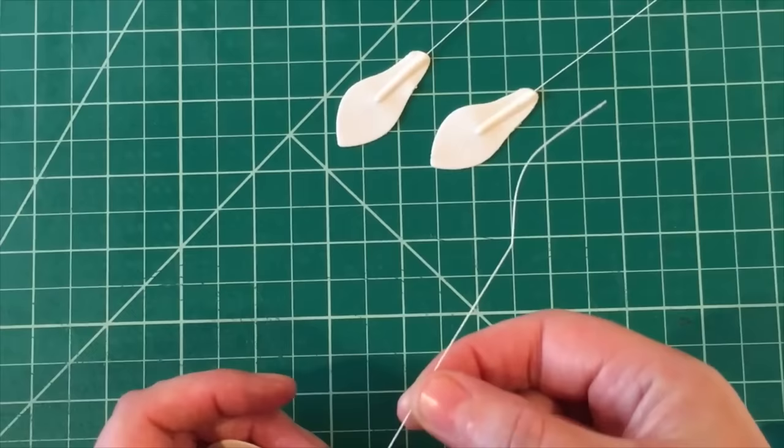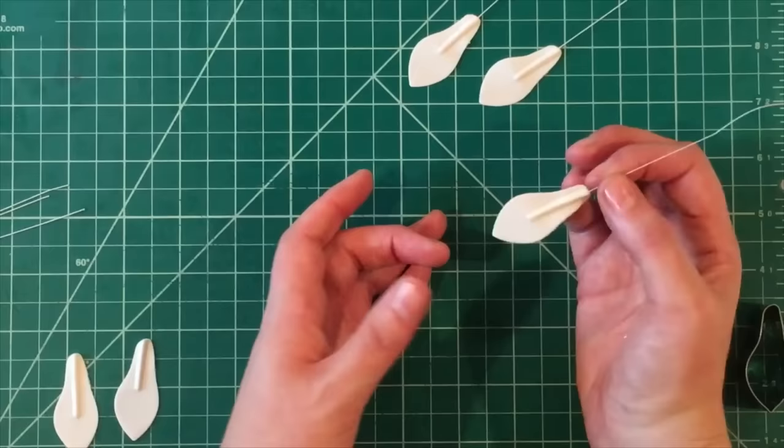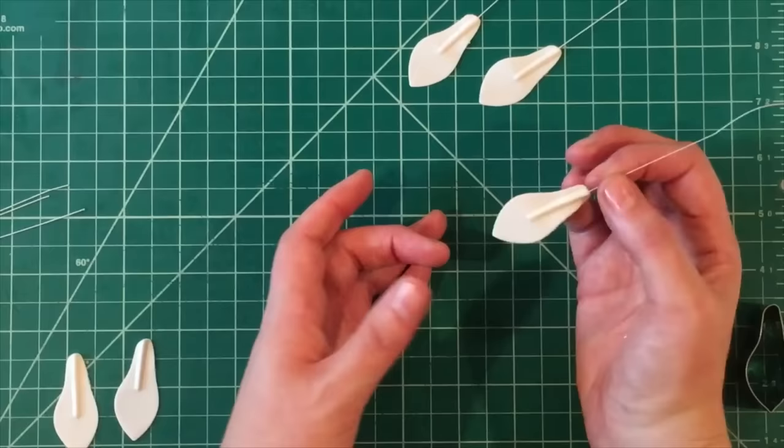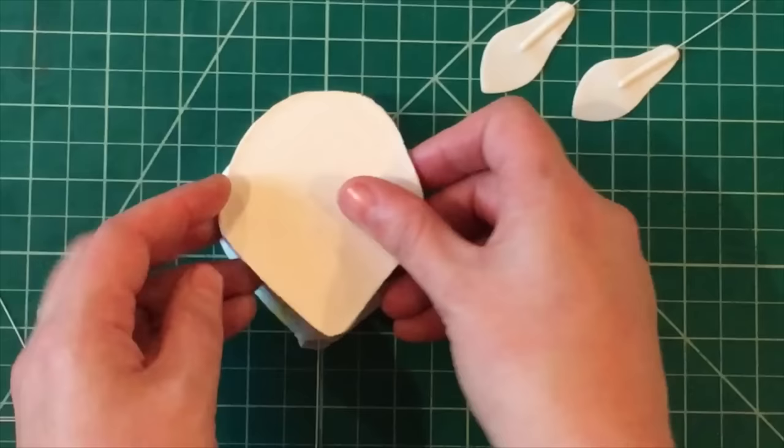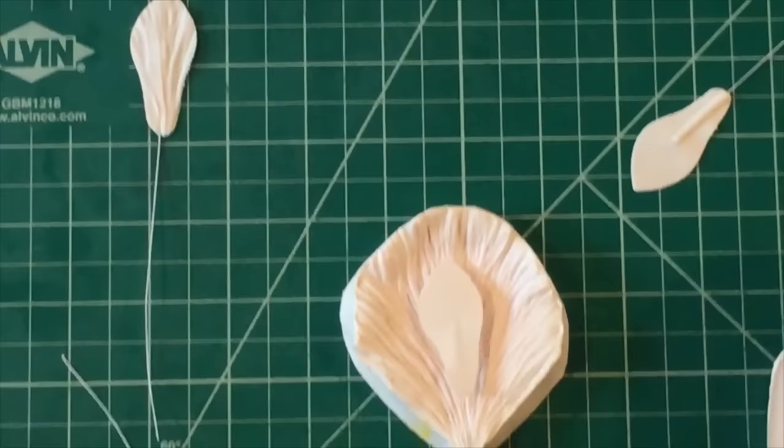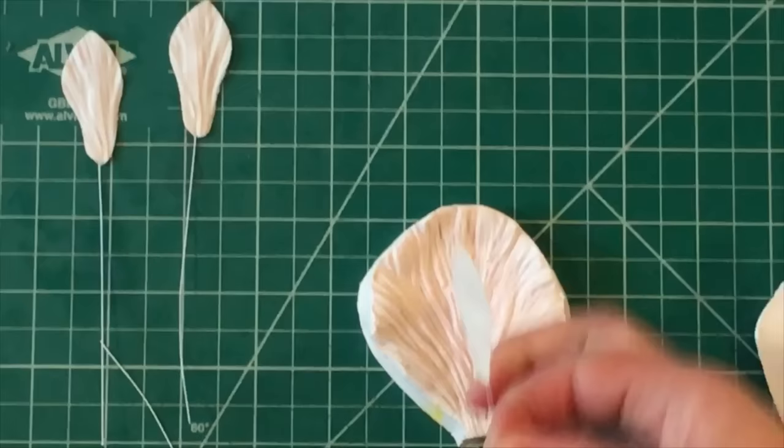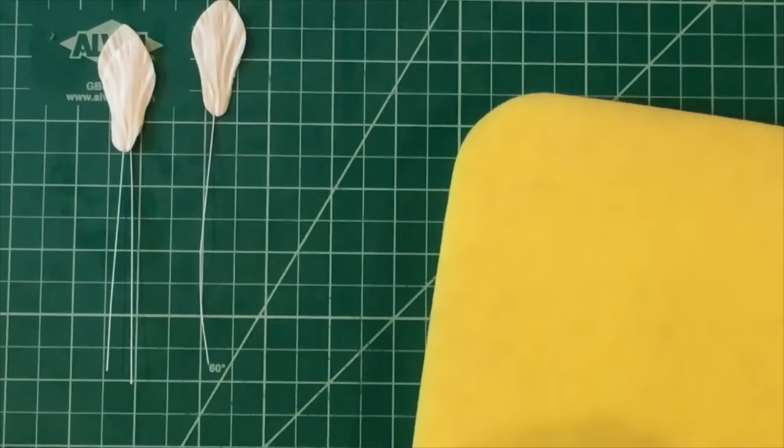So from here, this is actually a peony veiner. It's the one I like. I'm going to vein it first. You can vein it up or vein down. It doesn't really matter with this press because they're the same on both sides. But you want to get a nice good indentation like that.